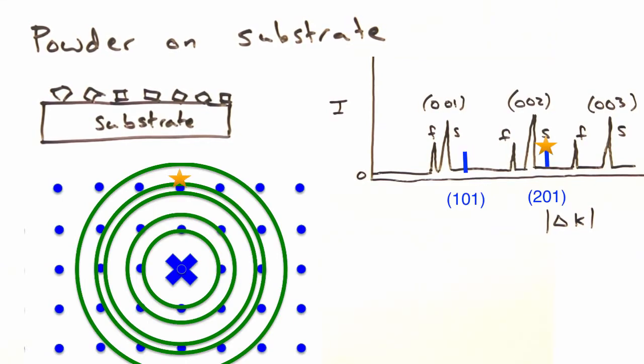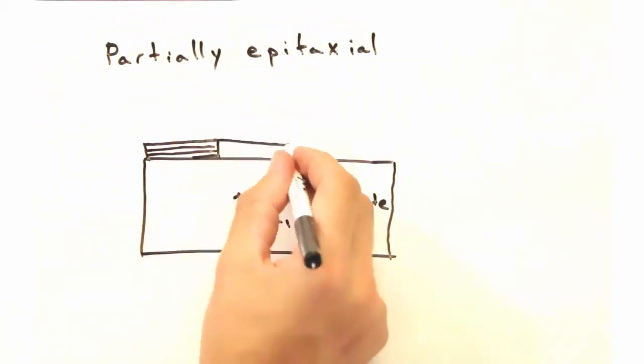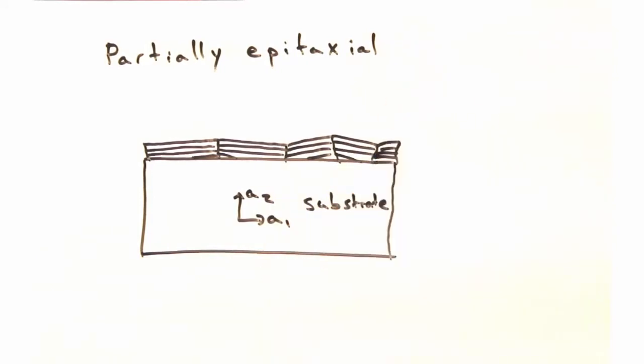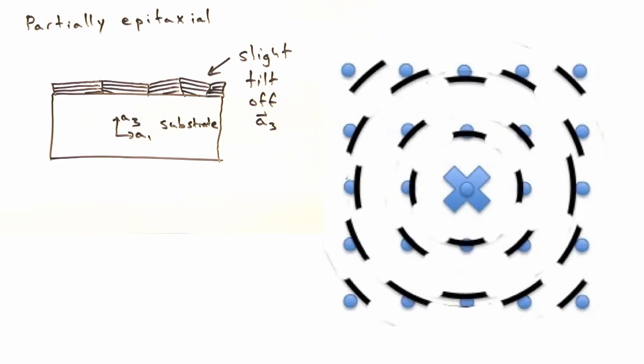In reality, a film that is only partially epitaxial will have some of the grains oriented correctly and some of them will be slightly tilted. In that case, our reciprocal space would have the dots for the substrate lattice and short arcs for the thin film reciprocal lattice.